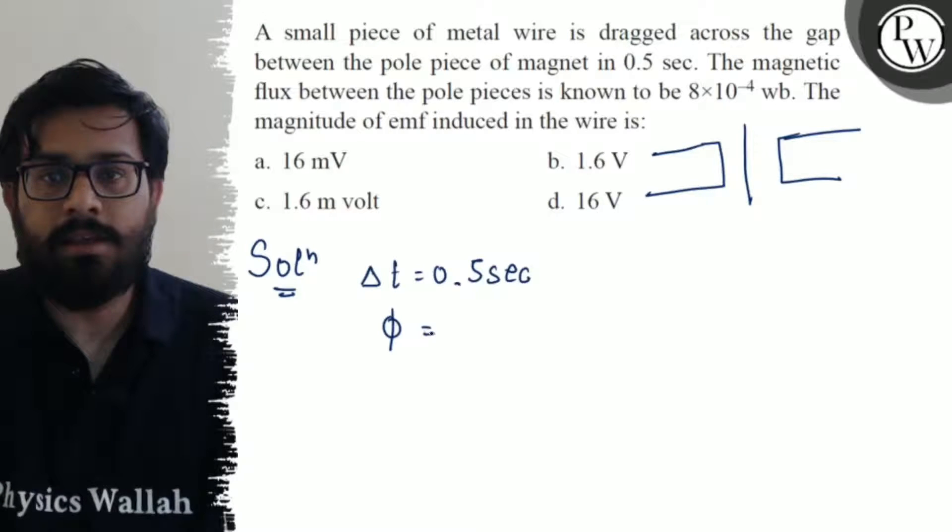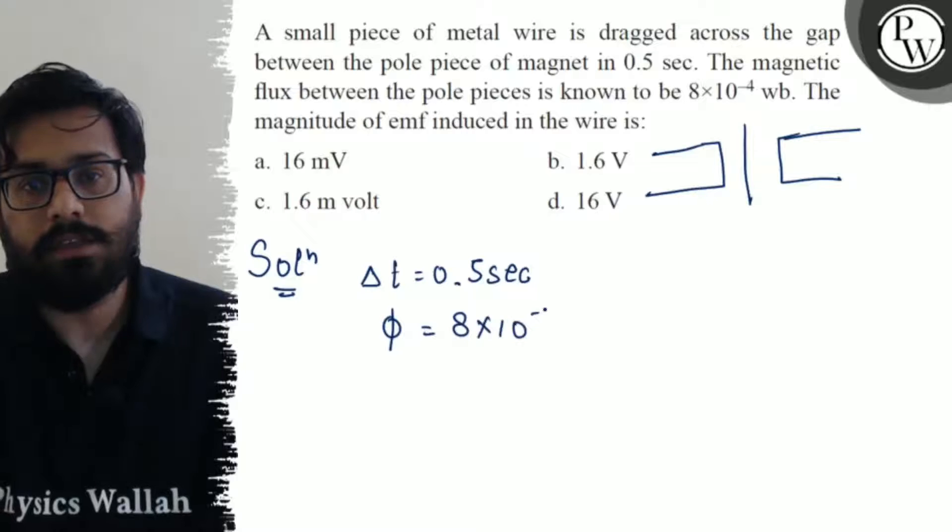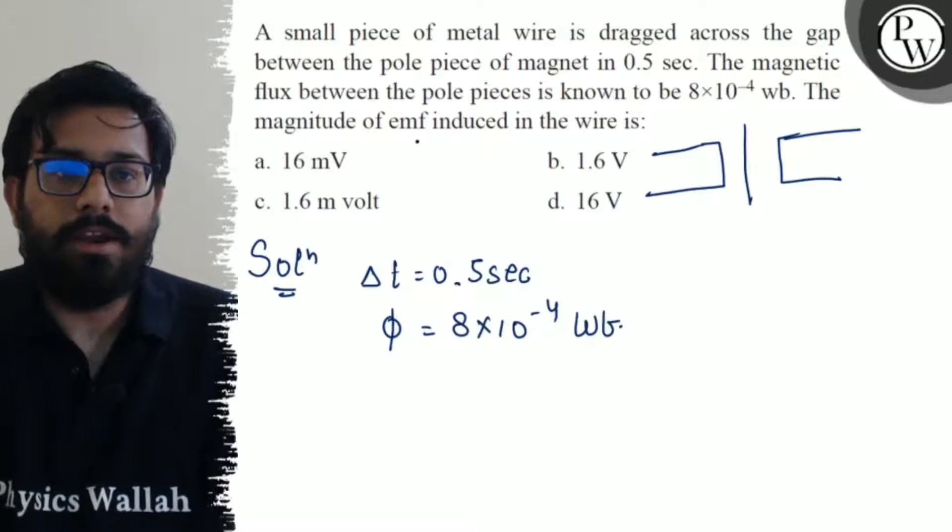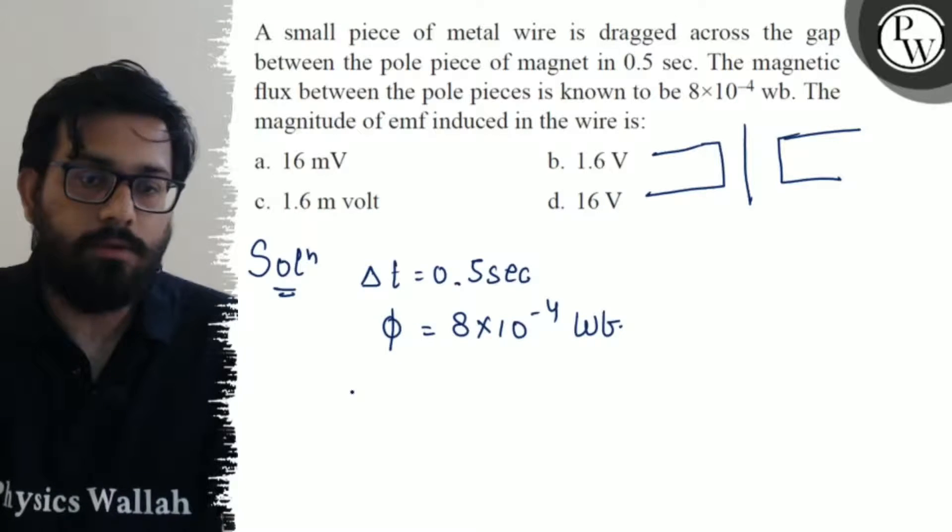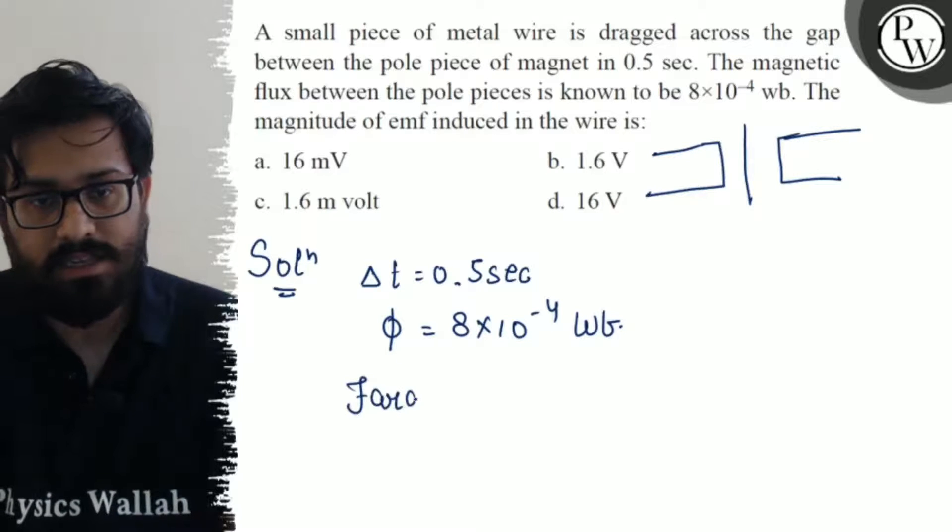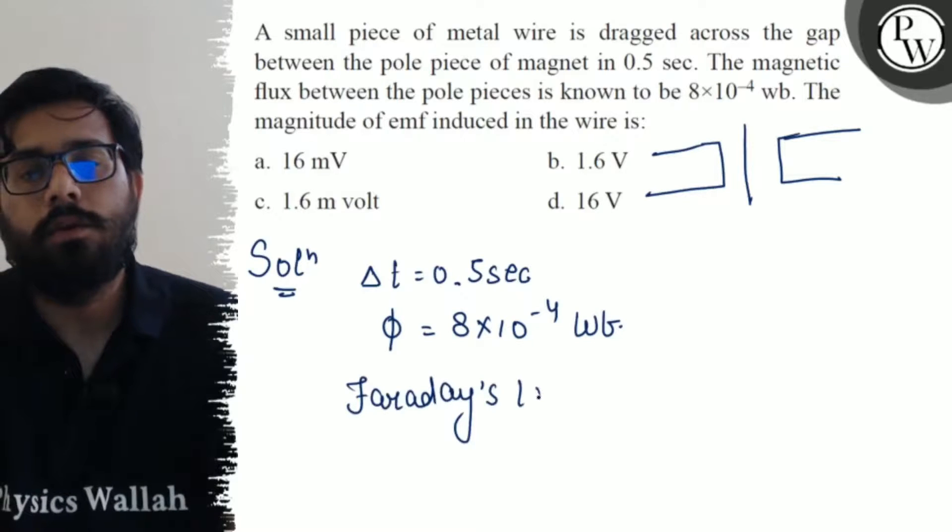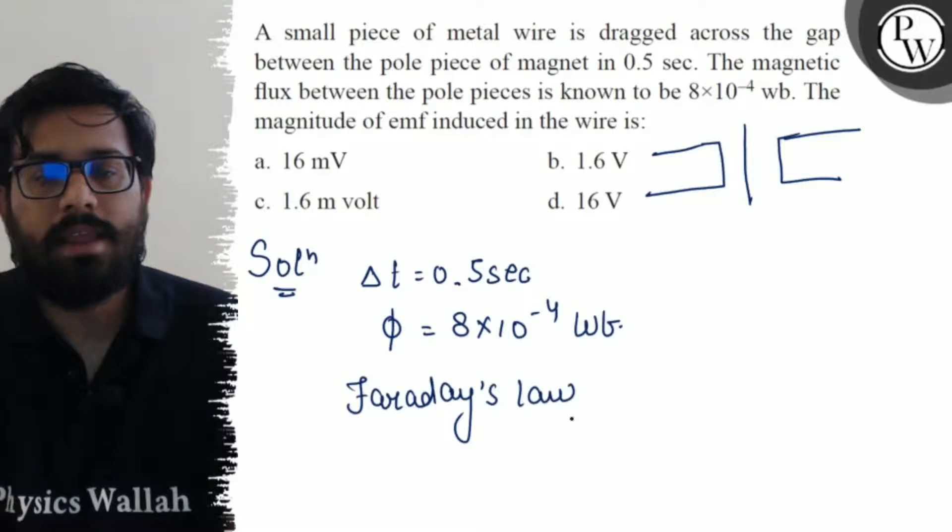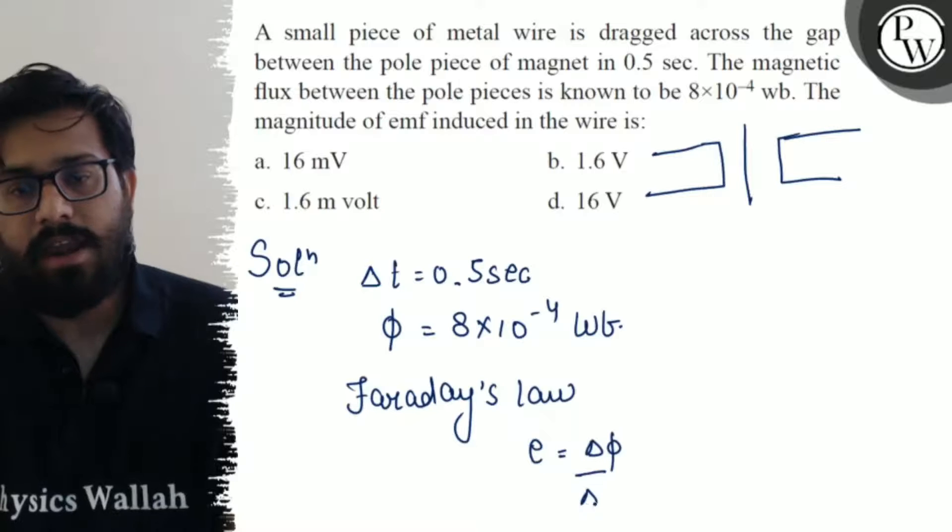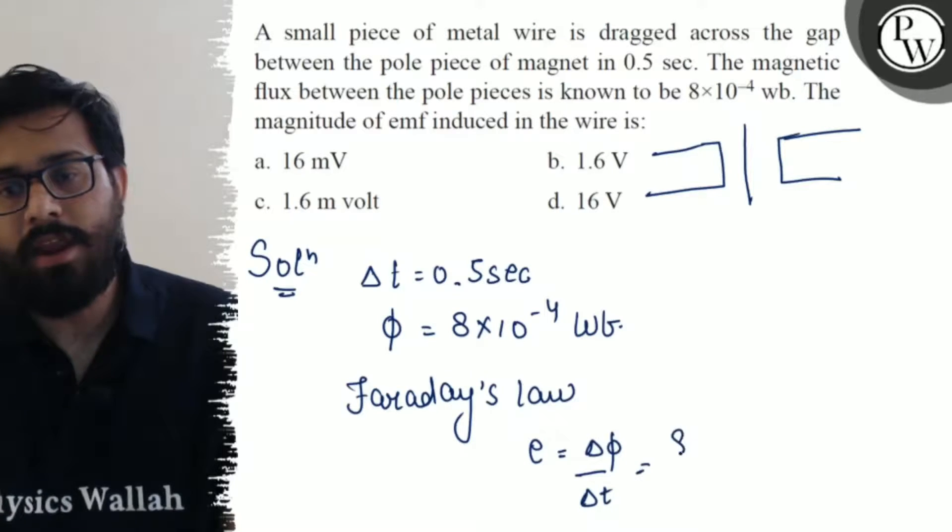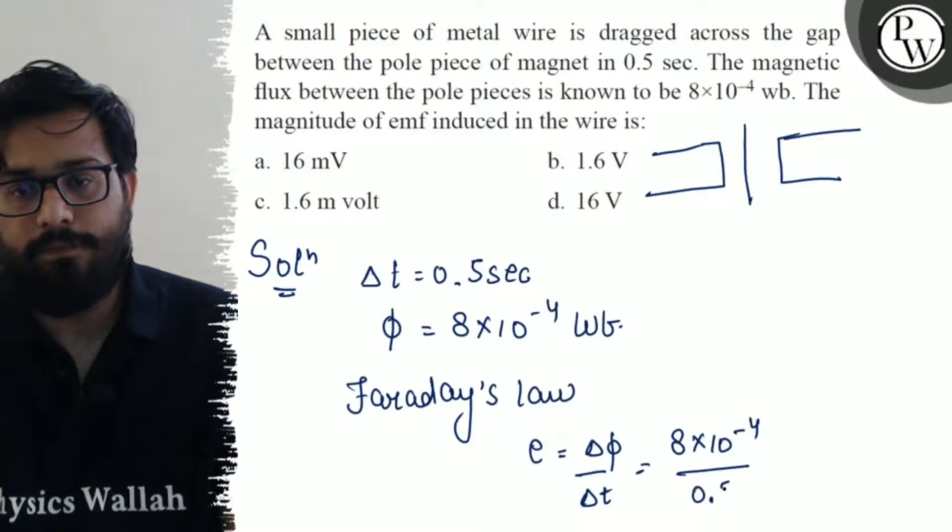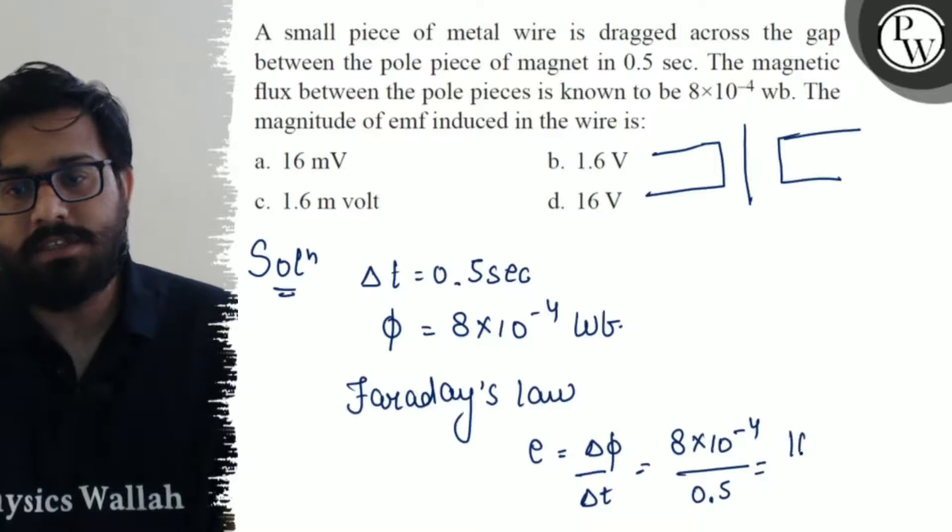We have the flux given as φ = 8×10^-4 weber, and we have to calculate the magnitude of emf induced in the wire. Using Faraday's law, induced emf equals Δφ/Δt. Delta phi is 8×10^-4 upon time interval 0.5. Solving it, you will get the value of 16×10^-4 or 1.6.